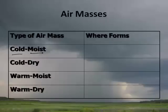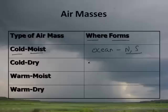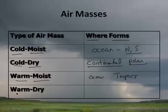There are four types of air masses, and the name comes from where the air mass forms. If it's cold and moist, it formed over the ocean in the Arctic or extreme north or south latitudes. If it's cold and dry, it's called continental polar — it formed in a continental polar region. If it's warm and moist, it formed over the ocean in the tropics.